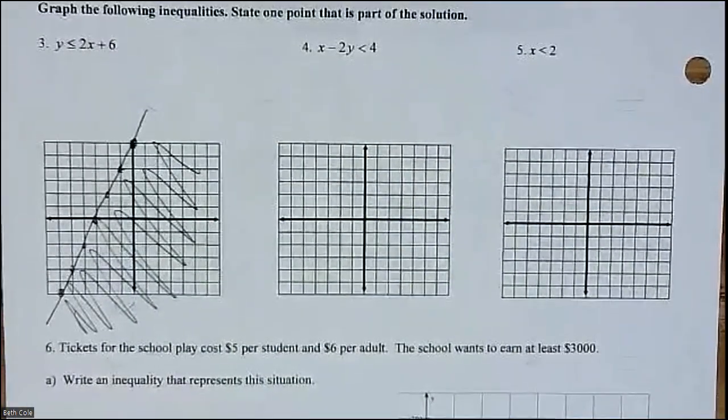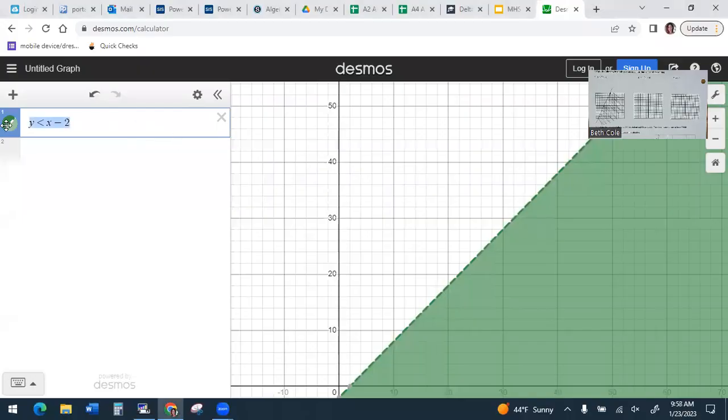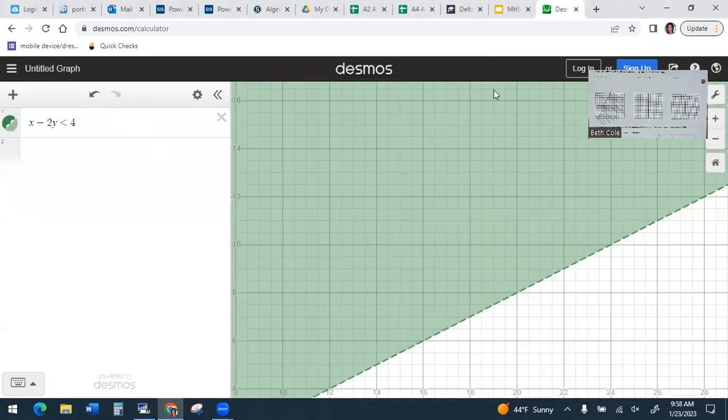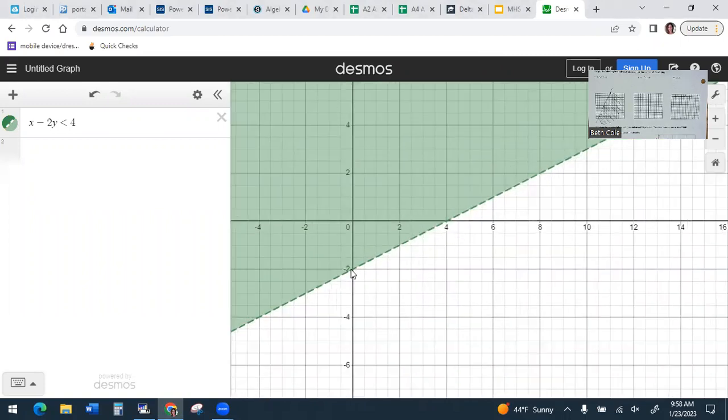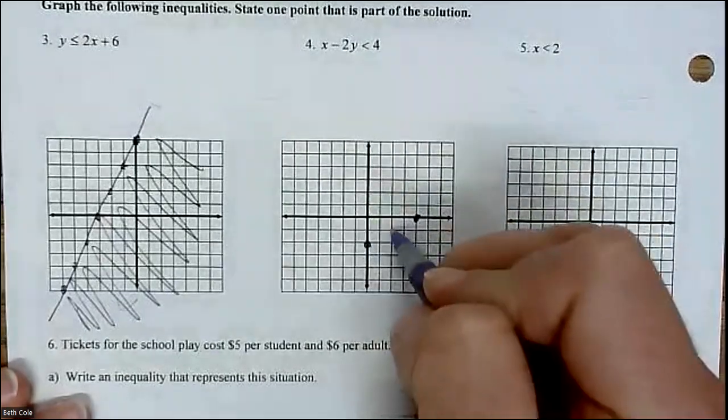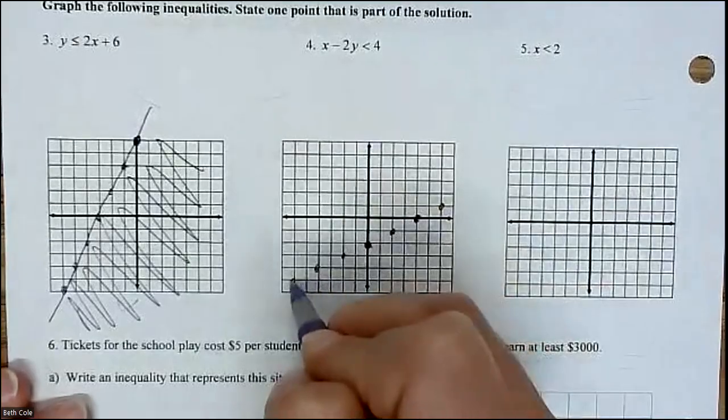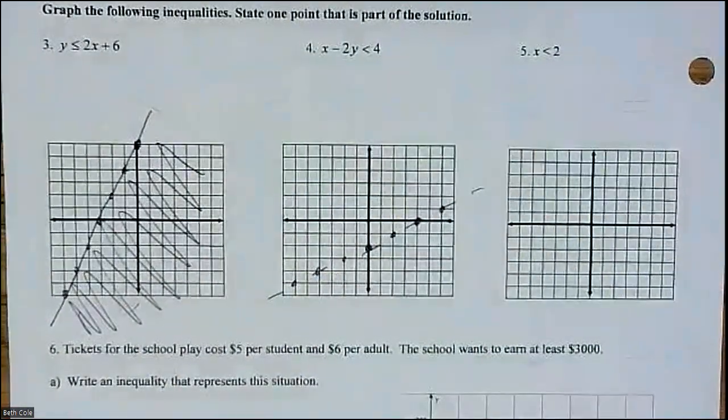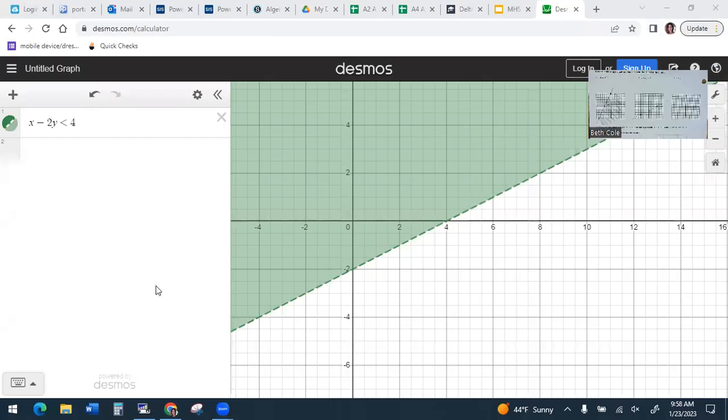Now this one, I'm going to type in the calculator because it does not look like y is by itself. And so that'll be the easiest way to do this. x minus 2y is less than 4. Now let me kind of zoom in on that a little bit. So you can put a point. The calculator literally does it for you. You can put a point at 0, negative 2, and 4, 0. I think the intercepts are the easiest ones to get. And then connect them. So right here and right here. And so what is the slope? It looks like we're going up 1 over 2. So you can put in a few more points there. And what kind of line was it? It was dotted.